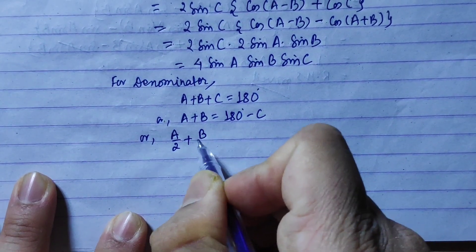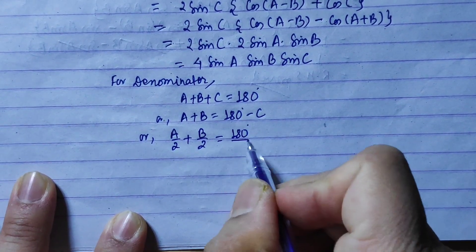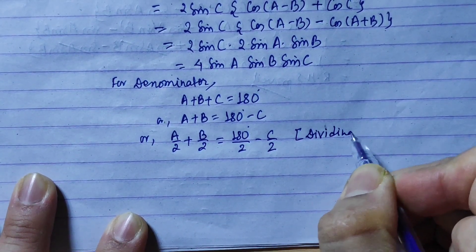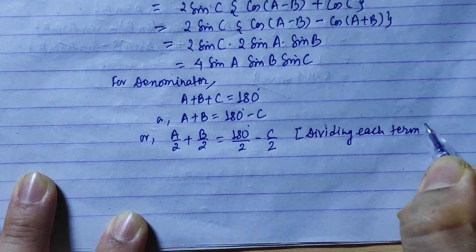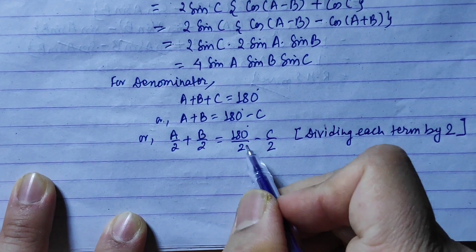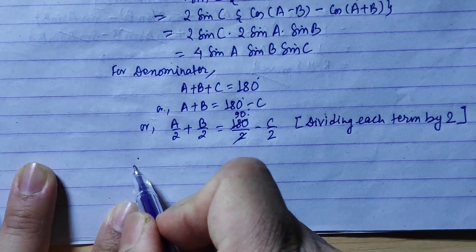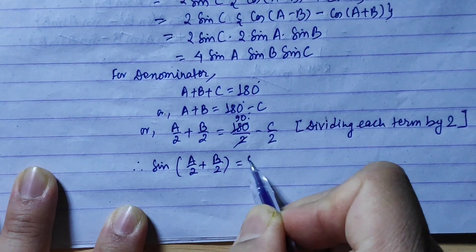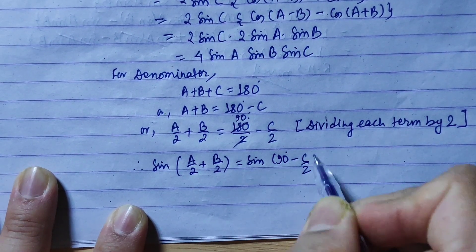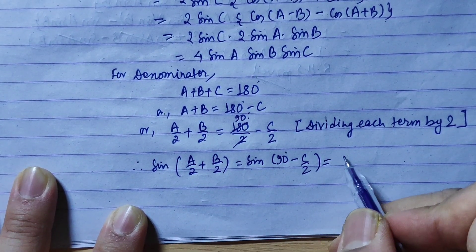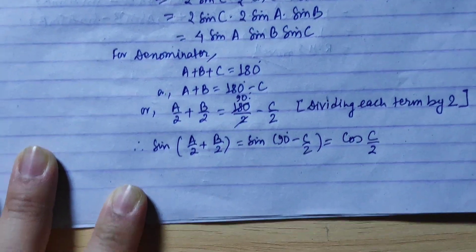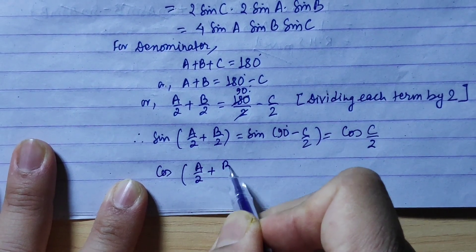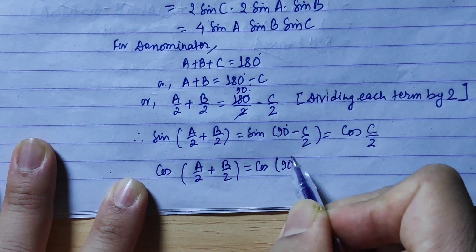Dividing the condition a + b + c = 180° by 2, we get a/2 + b/2 + c/2 = 90°. So a/2 + b/2 = 90° − c/2. Therefore sin(a/2 + b/2) = sin(90° − c/2) = cos(c/2), and cos(a/2 + b/2) = cos(90° − c/2) = sin(c/2).